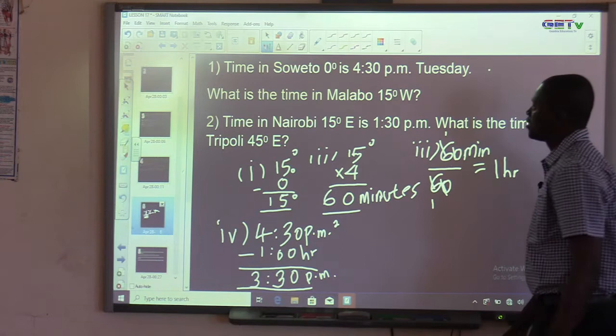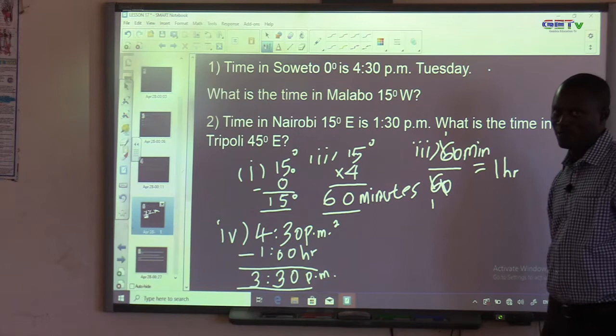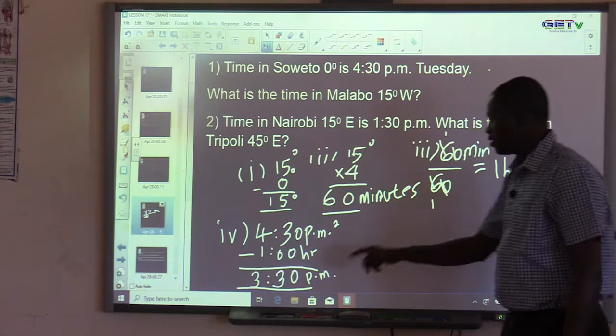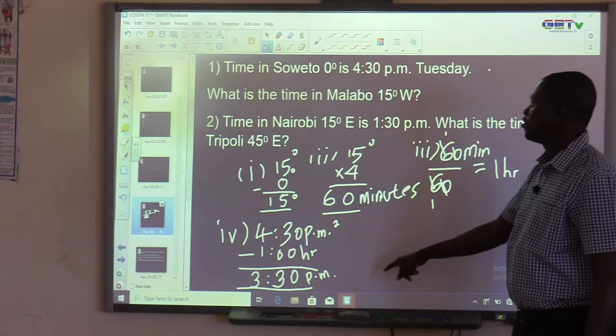On Tuesday, the same Tuesday, because it is just one hour difference between them. When it is 4.30 PM on Tuesday in Soweto, the time in Malabo will be 3.30 PM on the same Tuesday.